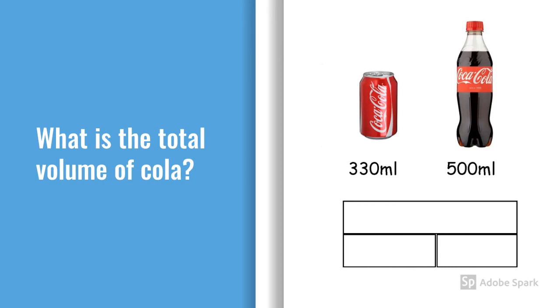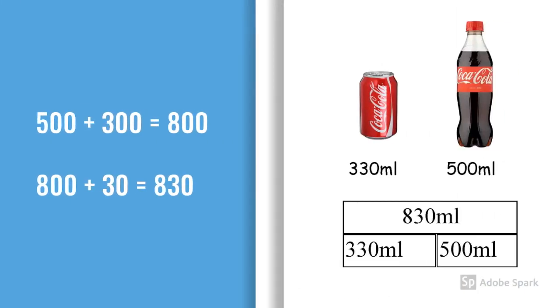One strategy for adding and subtracting is using the bar model. This is what we are going to do for the next few problems. So in your workbook or any piece of paper if you can have a go quickly drawing the bar model to see if you can answer this question. What is the total volume of the cola? You have 350 millilitres add 500 millilitres. Check your bar model against the one on this slide. To solve this I did 500 add 300 equals 800 and then the 800 plus 30 equals 830 millilitres.